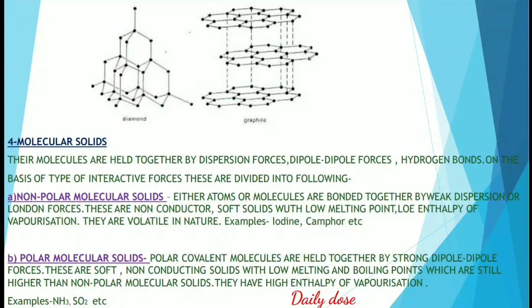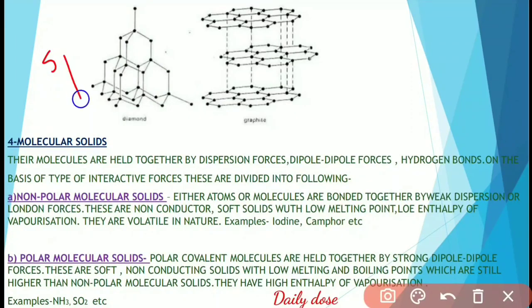You can see the structures of diamond and graphite on screen. Diamond has sp³ hybridized carbon atoms, and in graphite the carbon atoms are sp² hybridized. You can see the arrangement clearly.